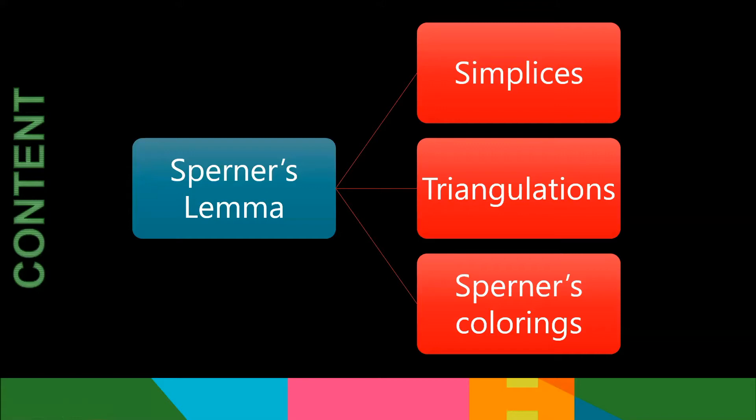To understand the concept of Sperner's Lemma, it is very important to understand three of its major components: simplices, triangulations, and Sperner's colorings.